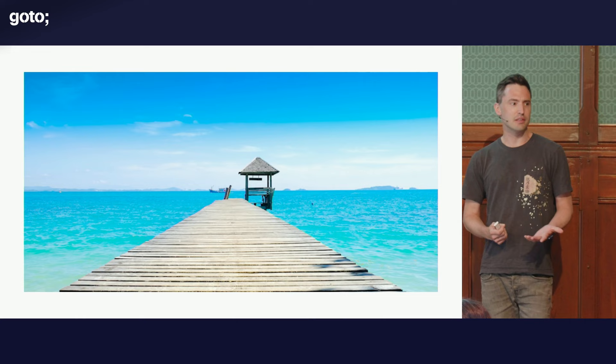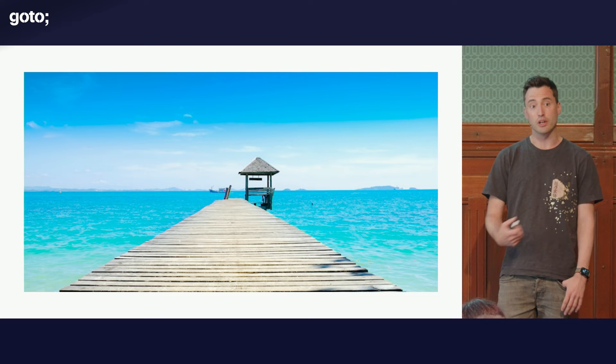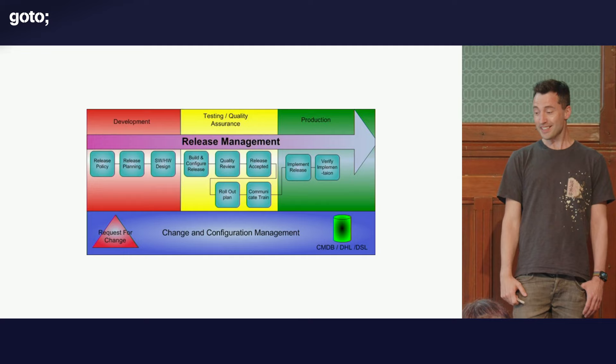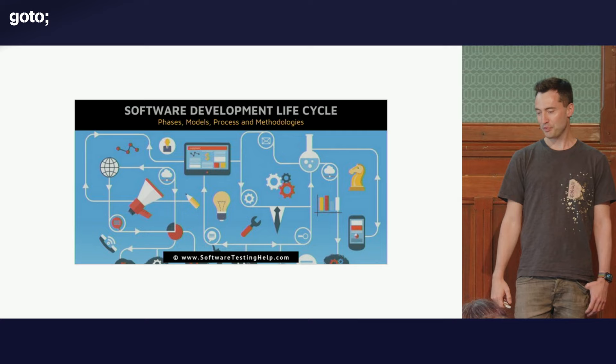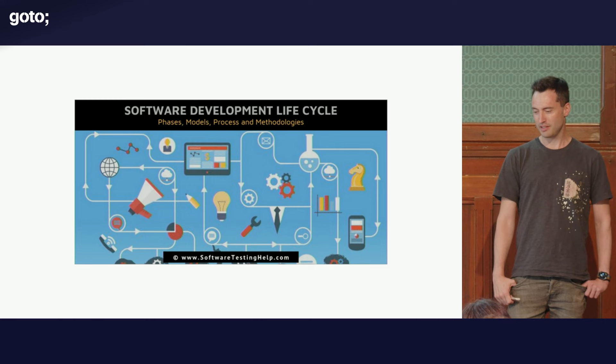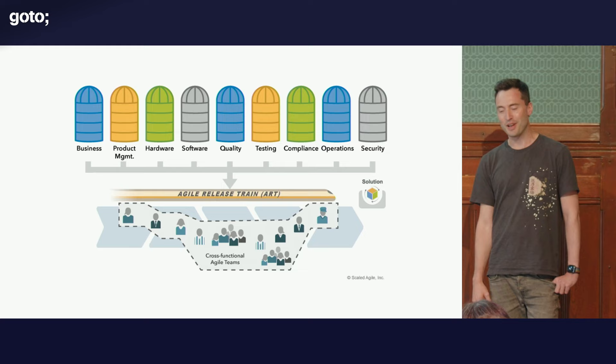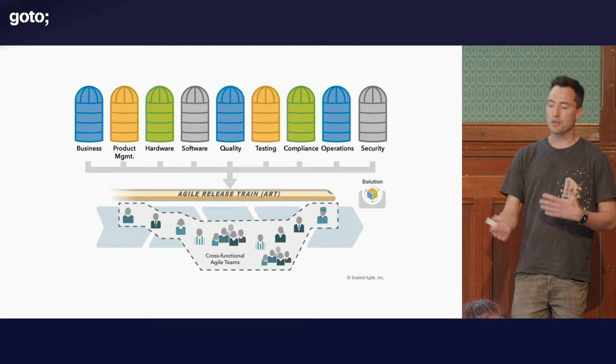Progressive delivery is a very hot topic at the moment. Lots of people have talked about it, there are books on it. Getting software from code into the hands of users has always been a complicated, sometimes quite tedious process — and necessarily so. There's a lot of different stages, a lot of checks, a lot of risk. But now we have the technology to tackle that in a different way and mitigate some of those issues.